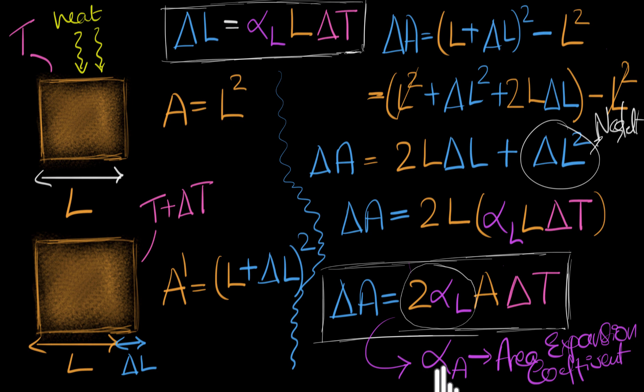So just like how alpha L helps us calculate changes in length, alpha A helps us calculate changes in area. And if in any numerical, they ask you to calculate the change in area and alpha A is not given to you, and only alpha L is given to you, you can still do it, because alpha A is just 2 times alpha L. But one thing we need to remember though, is that we arrived at this expression by neglecting delta L squared. And we can only do that when delta L is very small compared to L. In other words, this whole thing is an approximate relationship, which works when the expansions are very tiny.